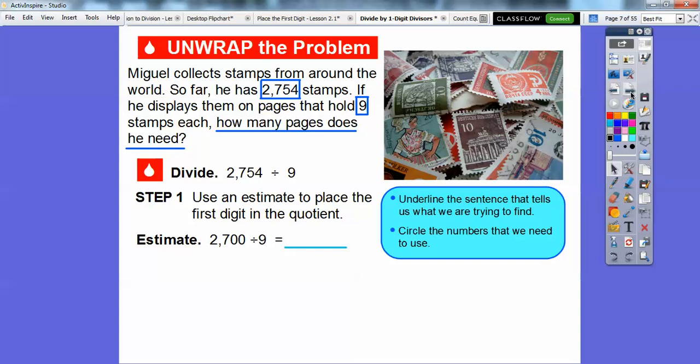So we're going to first estimate. This is a great learning tool to estimate, so we make sure we're getting a reasonable answer. So 2,700 divided by 9. 9 goes into 27 three times, and we're going to add these two zeros, so it's 300. So our estimate is 300.